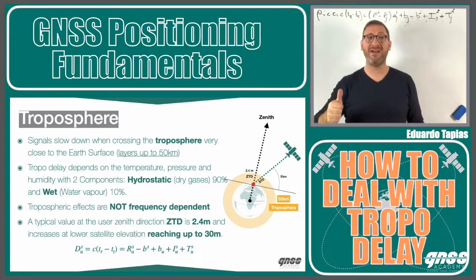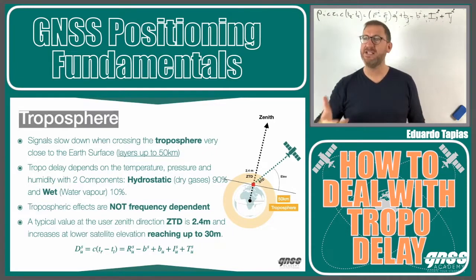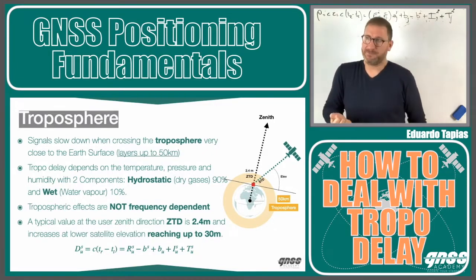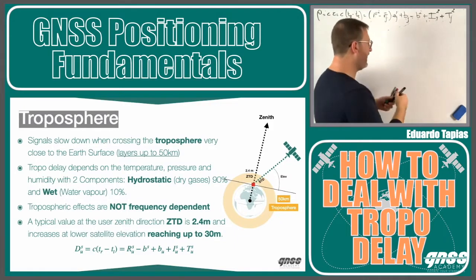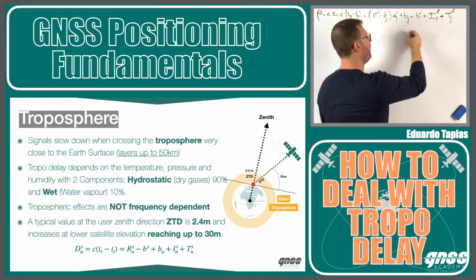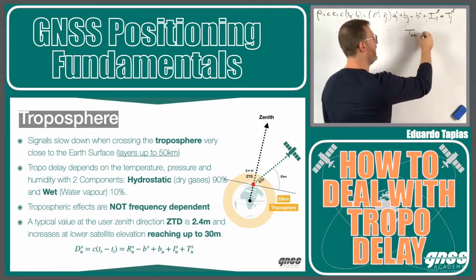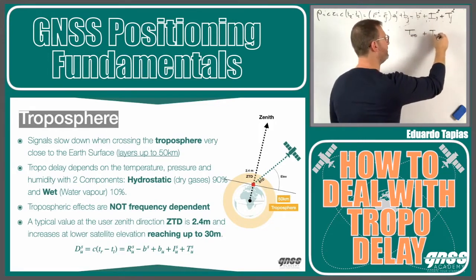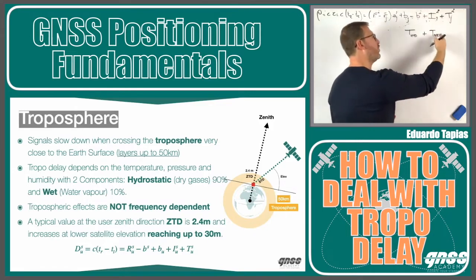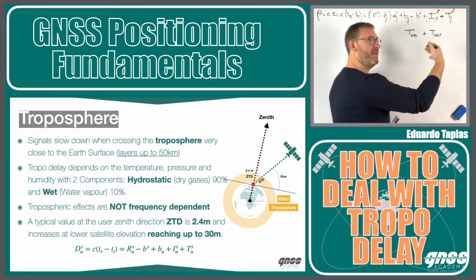We have gases, temperature, pressure, humidity, dry gases, water vapor — a lot of things that make the signals delayed when crossing the troposphere. In this delay, we can have the difference between the tropospheric hydrostatic or dry part, and the tropospheric wet part. The dry is more dry gases, and the wet is more humidity, water vapor.